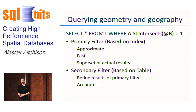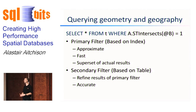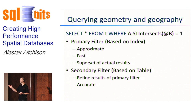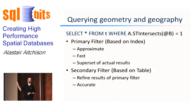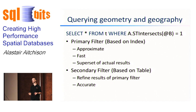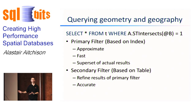When you execute that query, SQL Server uses a two-stage filter to process the results. There's a primary filter and a secondary filter. The primary filter is basically a first guess — it returns a superset of results that could fulfill the condition, guaranteed to contain all true intersections but possibly some false positives. The secondary filter then takes those results and weeds out the false positives so the final answer is accurate.